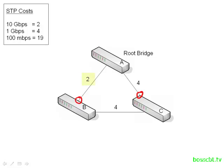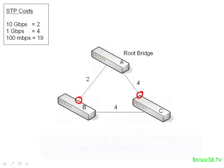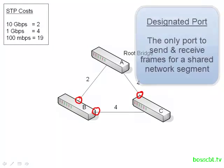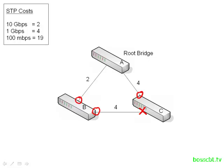Switch B would say its root bridge cost is 2. Switch C would say its path to the root bridge has a cost of 4. Since switch B has a lower cost, it becomes what is called the designated port for this particular LAN segment. The designated port is in charge of forwarding frames to and from this particular segment. Since switch C is not the designated port — and there's only one designated port on each LAN segment — it would go ahead and put its port into a blocking state. The blocking state means no frames are going in or out of that particular port.